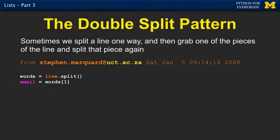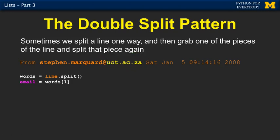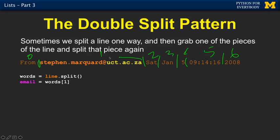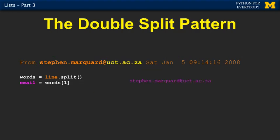Now we're going to show you a pattern I call double split — you split something and then you split it again. We're going back to the problem of pulling out email information. The first thing we do is split on spaces using the normal split, giving us word positions zero through six. We grab word sub one, which is the email address — that pulls out the email address in really elegant lines. Compared to the find strategy where you had variables to track and remember, now it's just 'it's the second thing, just grab it.'